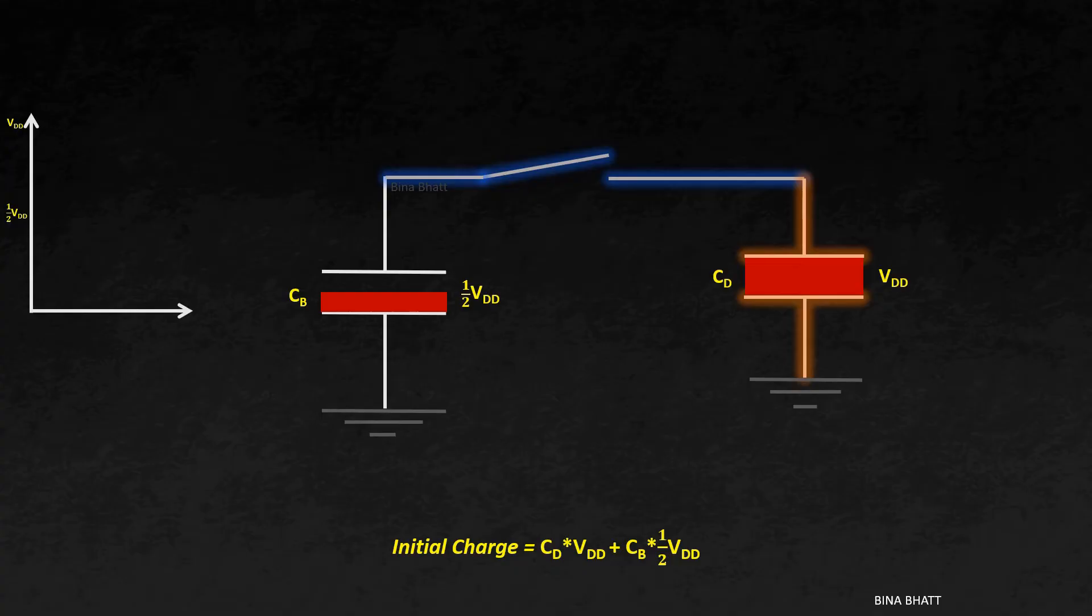Now, when the word line is asserted for the read operation, the switch closes, connecting both the capacitors. As the cell capacitor is at VDD and the bit line capacitor is at VDD by 2, charge starts flowing from higher potential to lower potential. Or, the cell capacitor starts discharging, causing an increase in the charge of the bit line capacitor. This flow continues until an equal potential value. Or in other words, until the time the potential on both the sides becomes the same or equal.